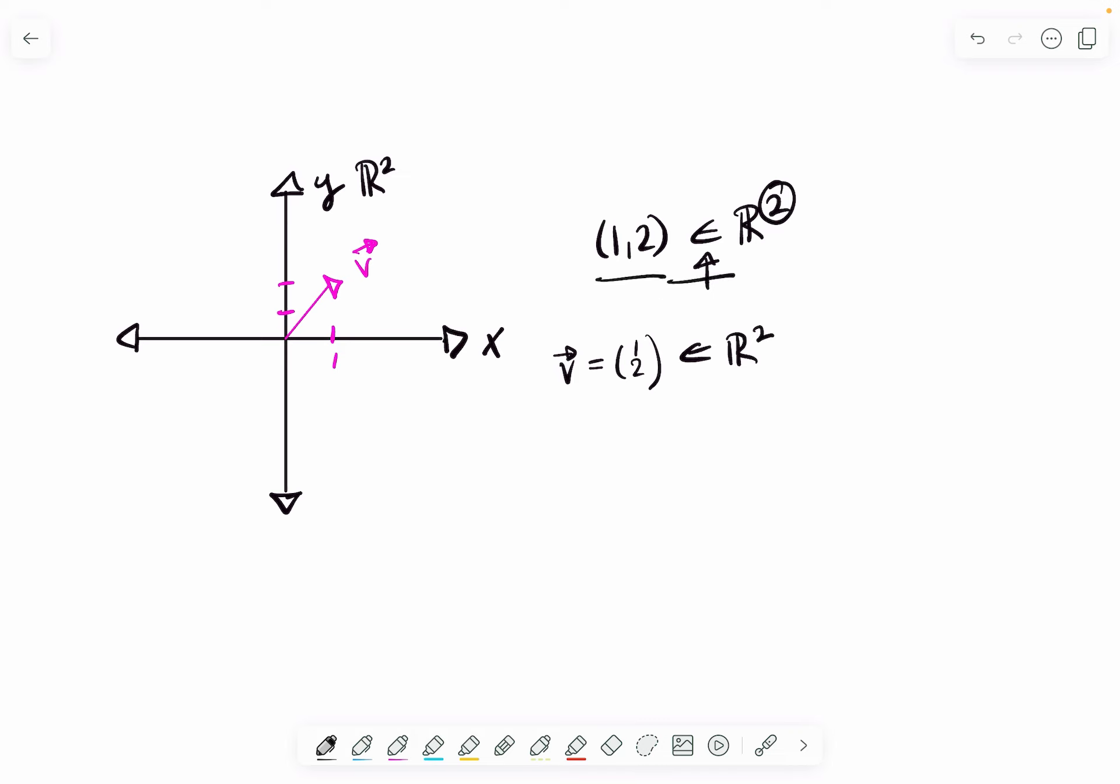So here, this point is an element of the set of all real two-dimensional points, every other point that can exist. And here, this vector is an element of the set of all real—that's what the R means—two-dimensional vectors. It's just saying it's one of the many real vectors in this space.